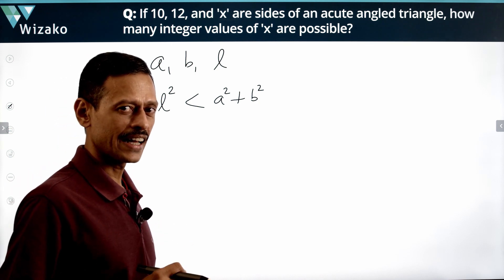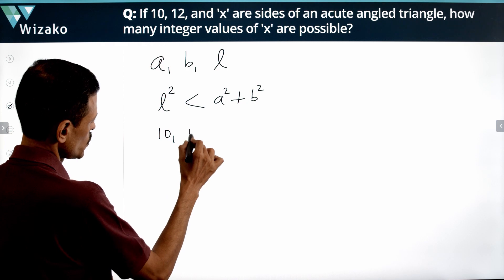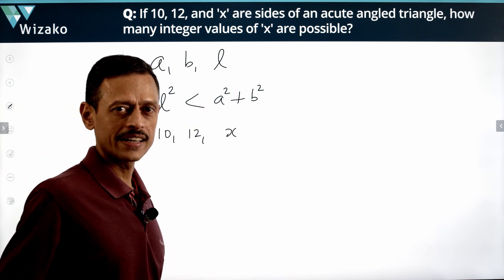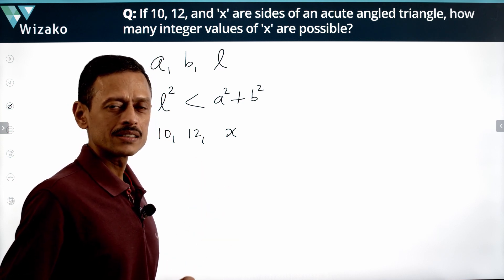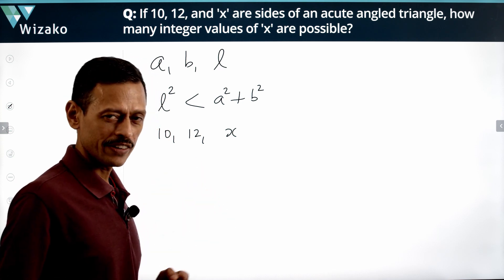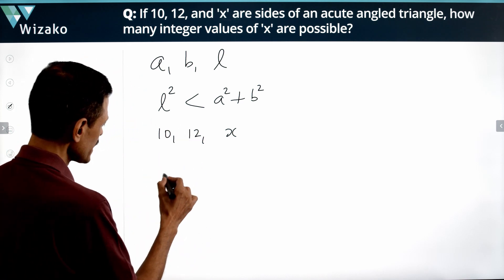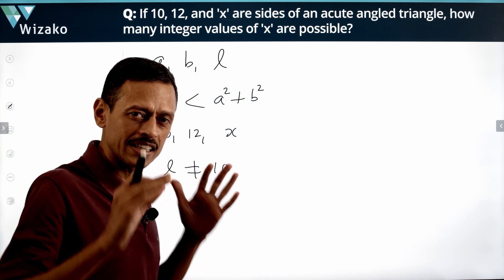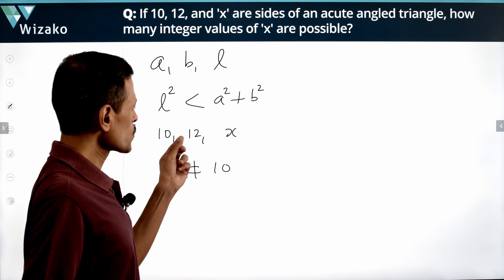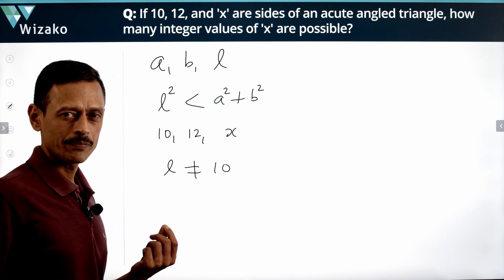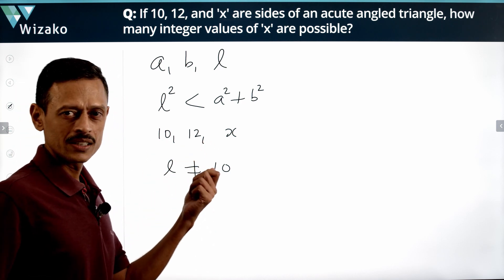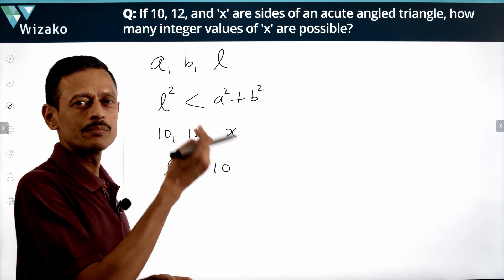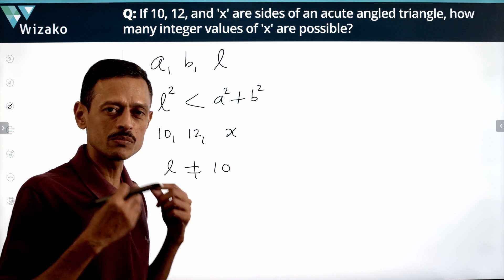The sides of our triangle are 10, 12, and x. When we substitute into the inequality, the first question is: what is L, the longest side? Certainly L is not 10, since 12 is greater. Is it 12 or x? If x is 14, then x is the longer side. If x is 10, then 12 is the longest. So both possibilities exist.